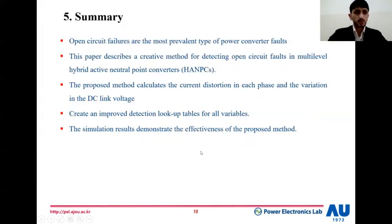To sum up, in this work, an open circuit failure, which is the most common fault in power converters, is being studied. This paper describes a creative method for detecting open circuit faults in multi-level hybrid ANPC converters. The proposed method depends on calculating the current distortion and voltage difference in the DC-link voltage. It creates an improved lookup table to summarize all the variables of the fault detection. Finally, the simulation results demonstrate the effectiveness of the proposed method.